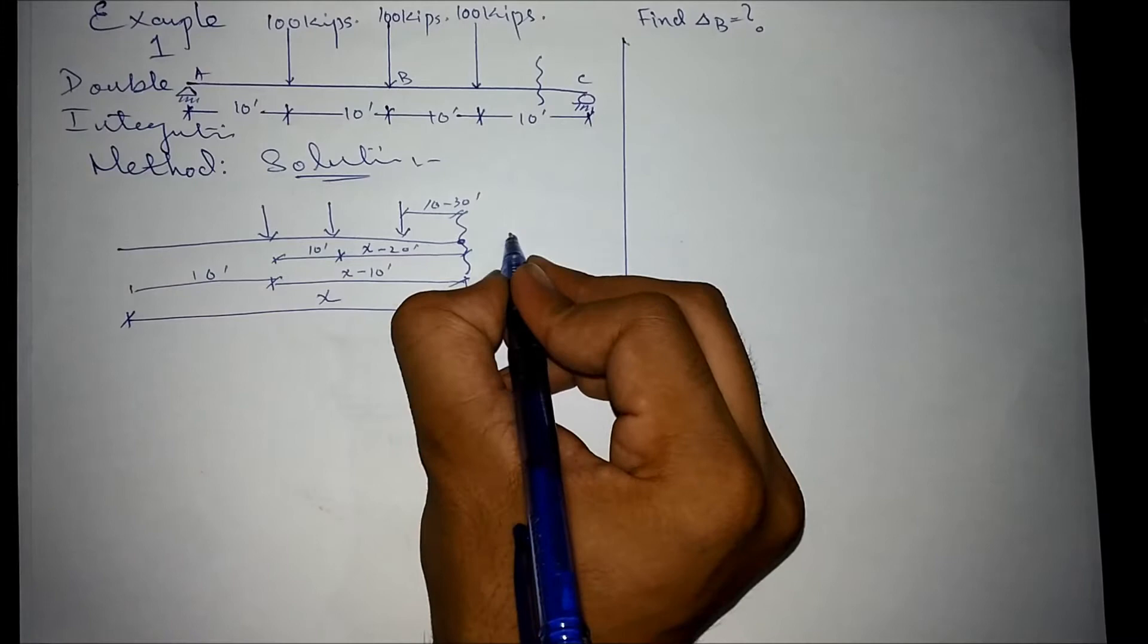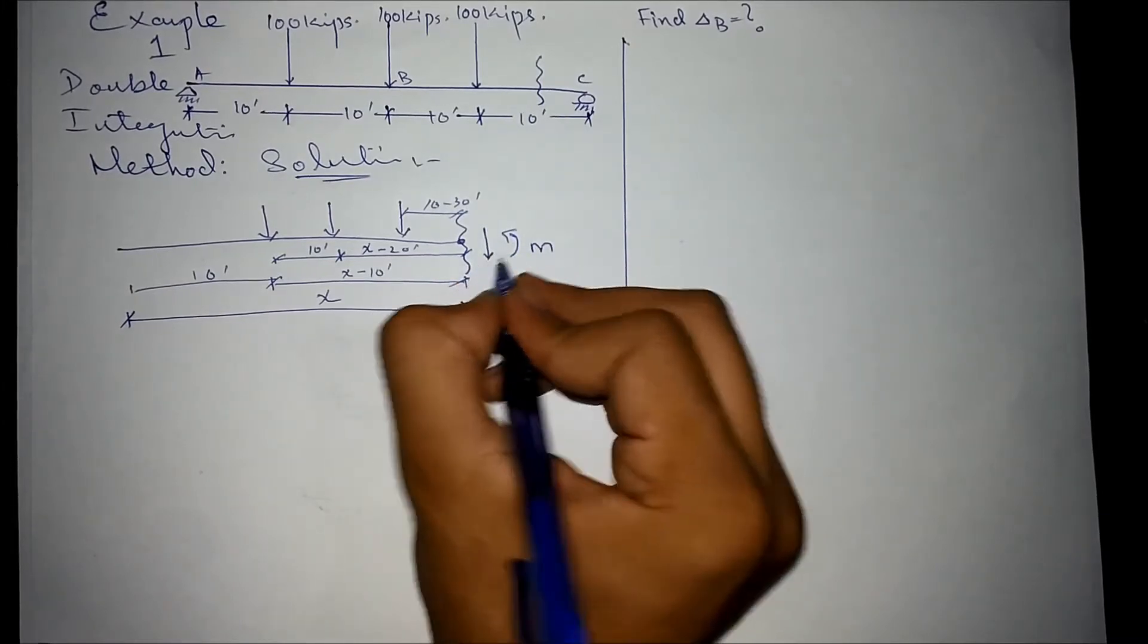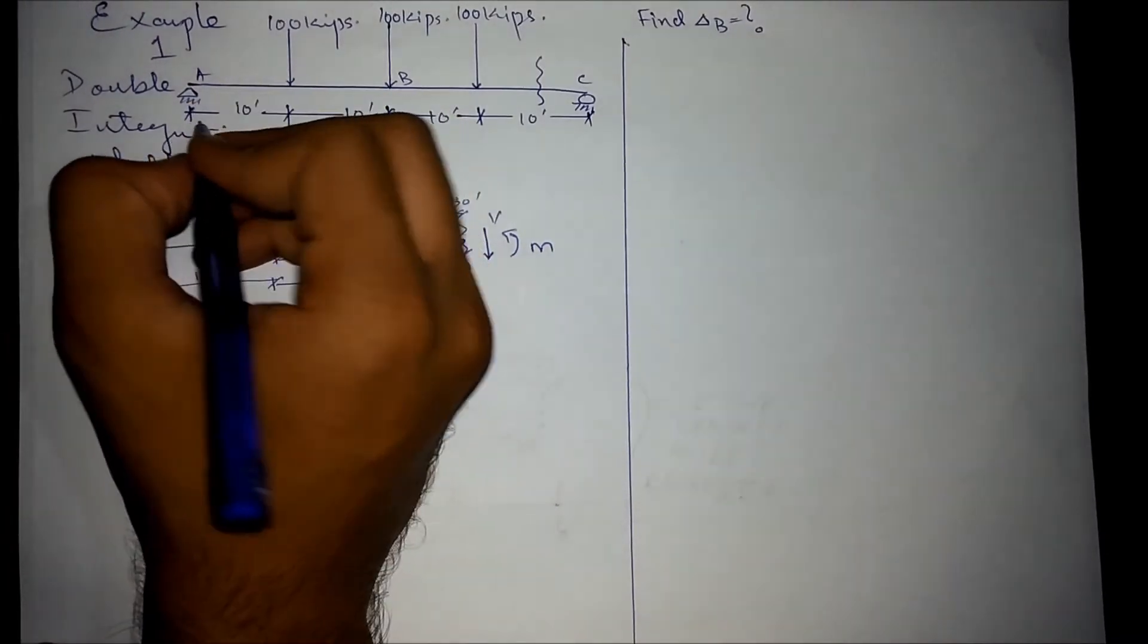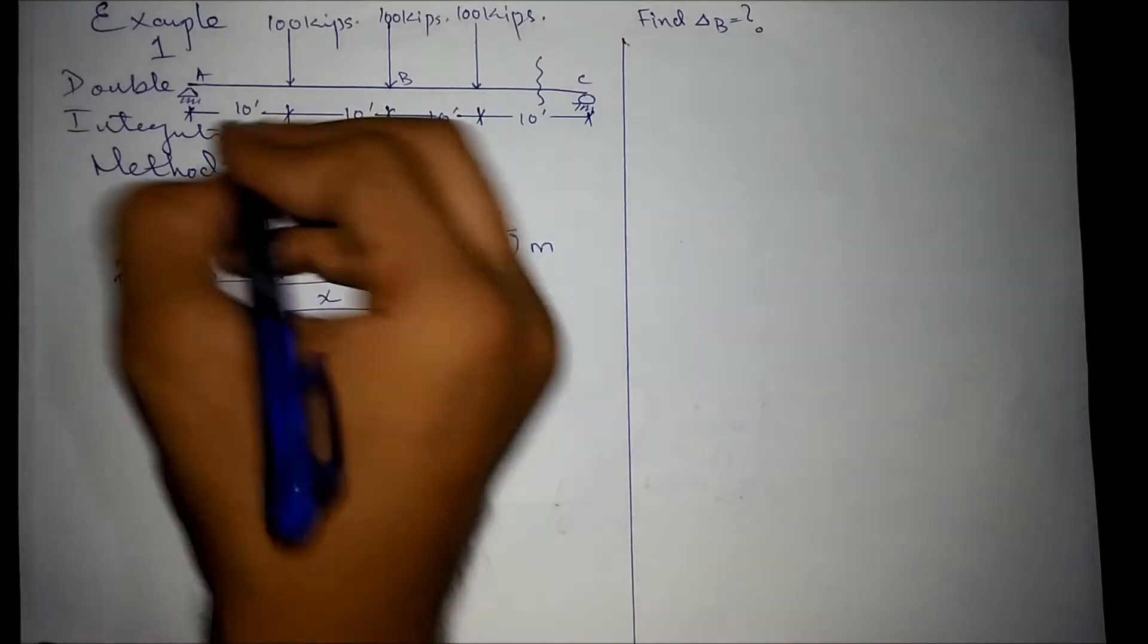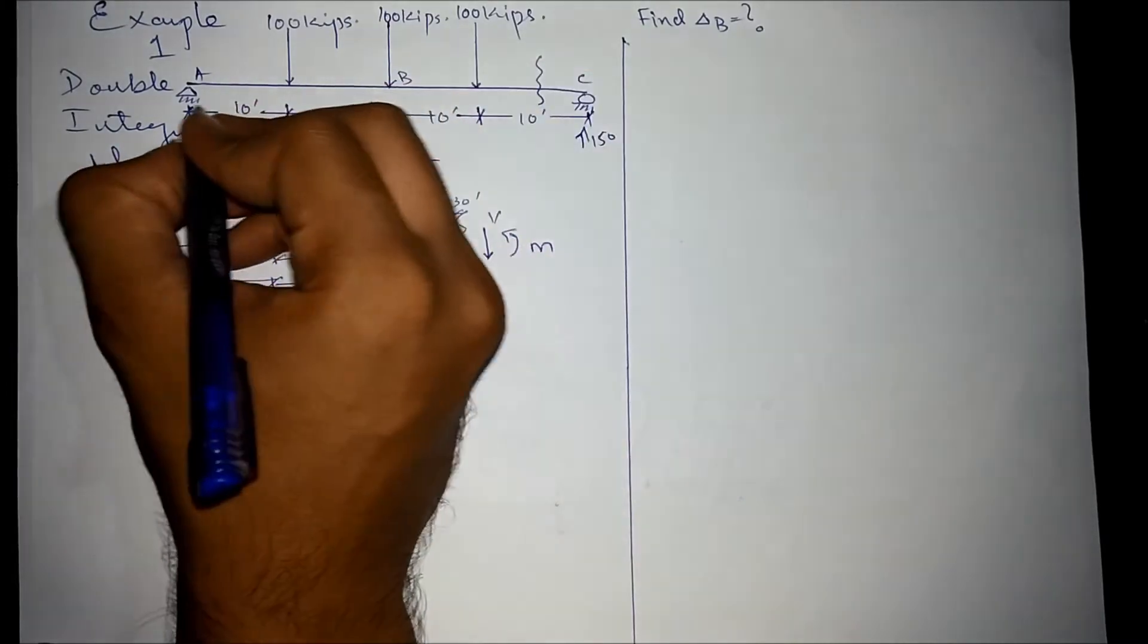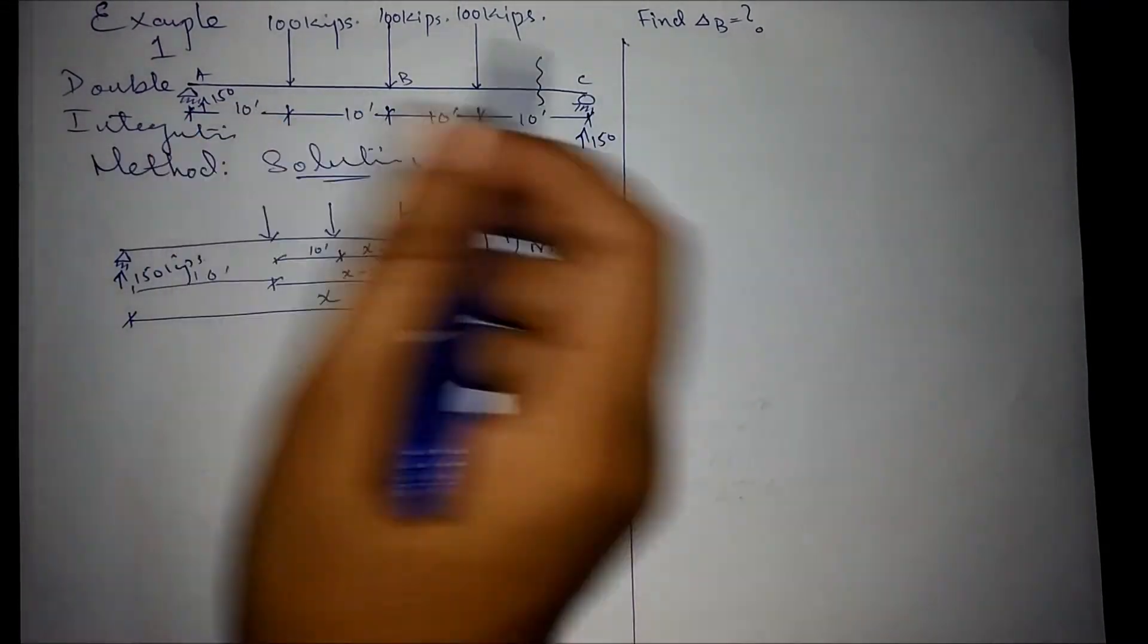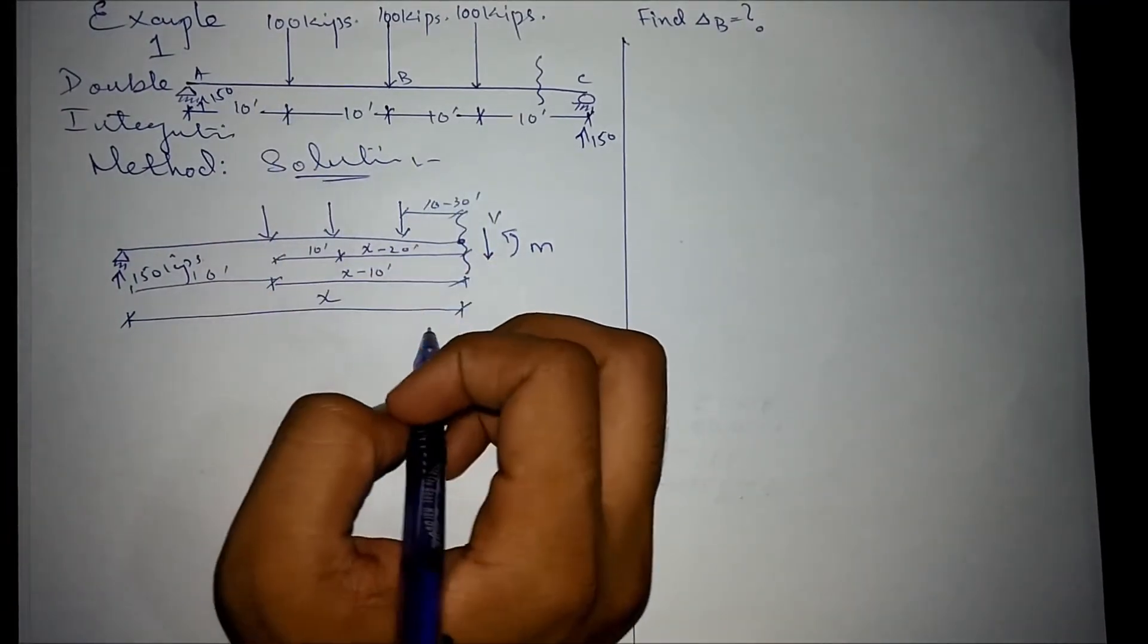As we already discussed, the section where we cut moment is anticlockwise and shear is downward. The reactions were already found as 150 kips, and here it is 150. Since it is a symmetric structure, we sum up the action forces and divide them into two. This gives us the reaction forces.